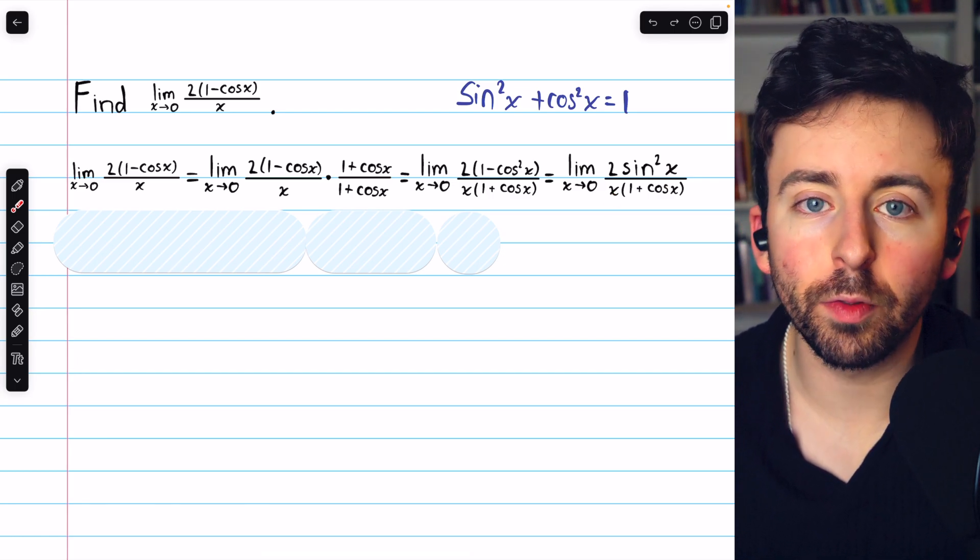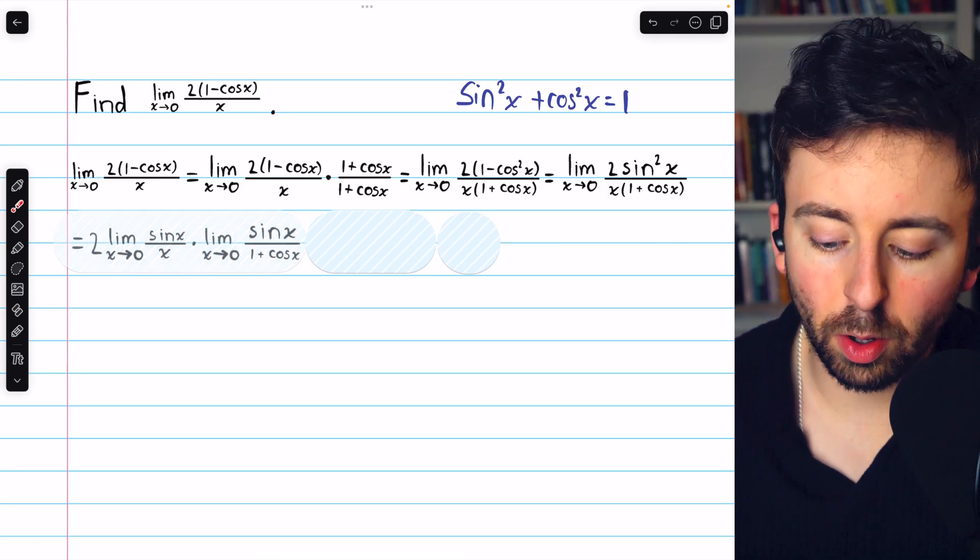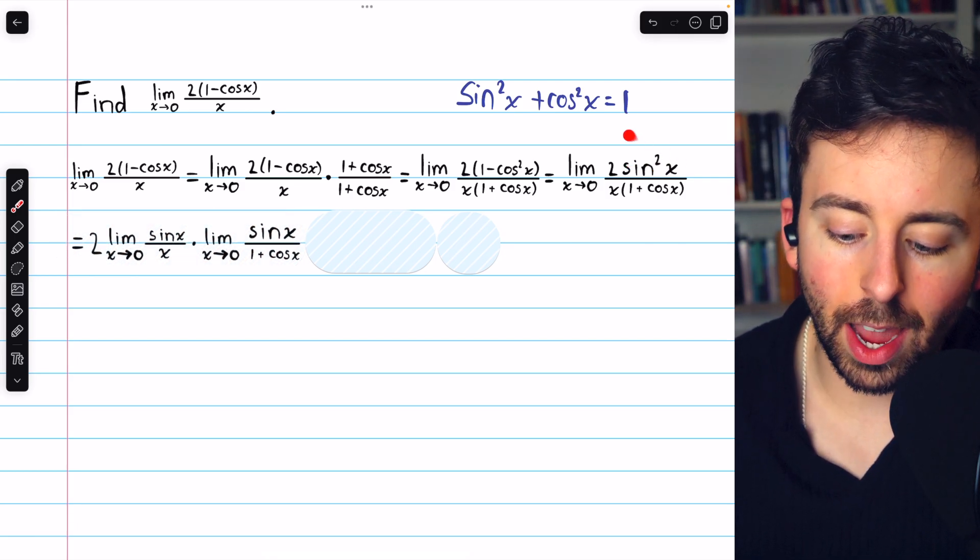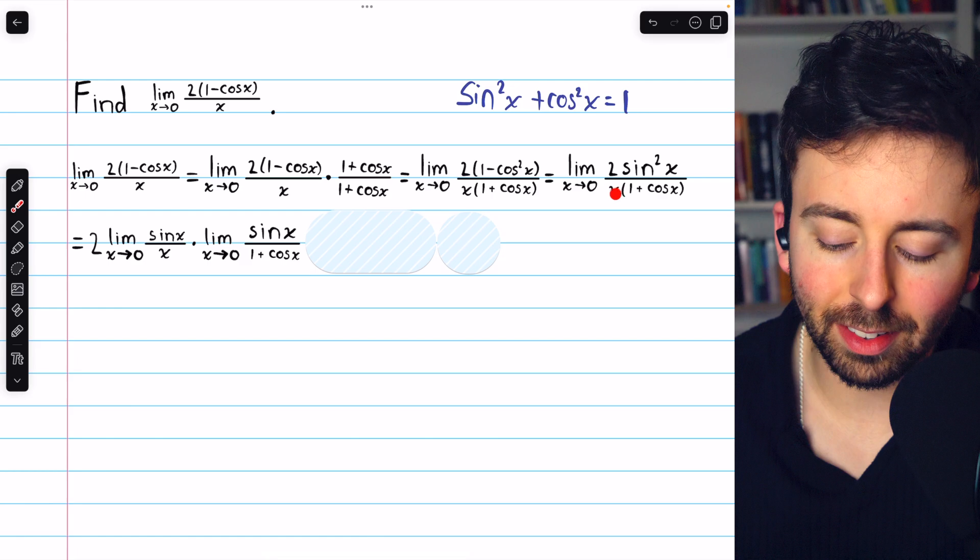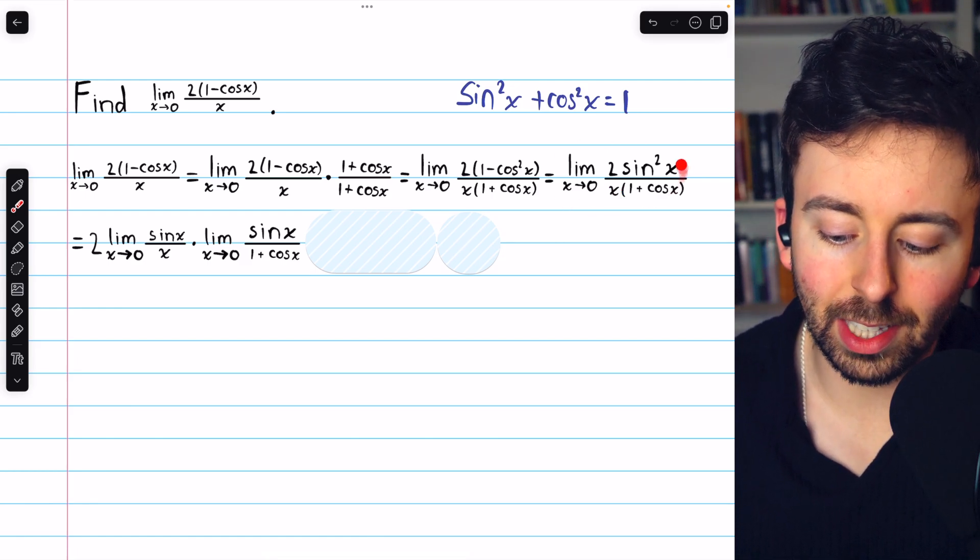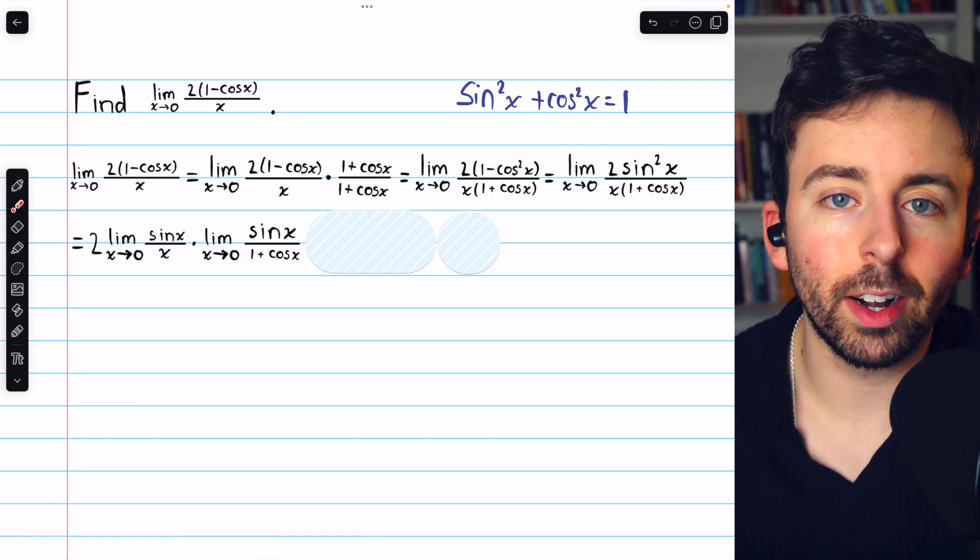That's going to give us another famous limit that hopefully you know. So the idea is we take one factor of sine x out along with this x in the denominator and just split this limit of a product up into a product of limits.